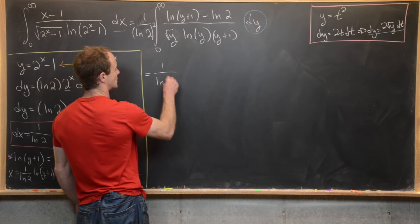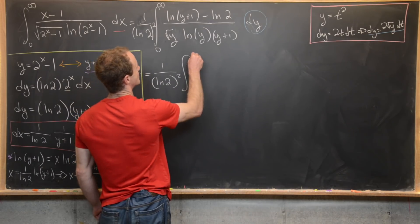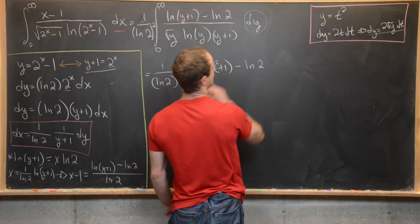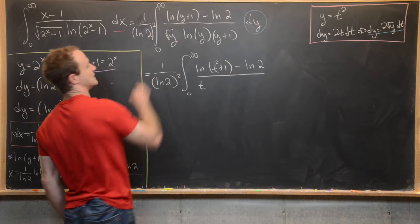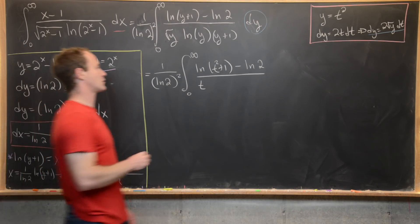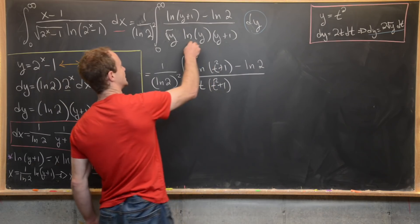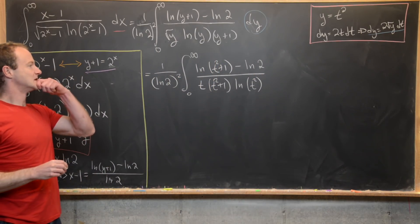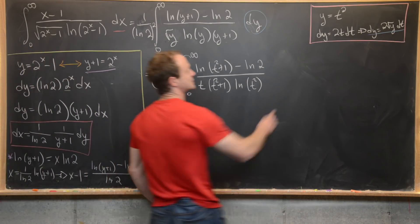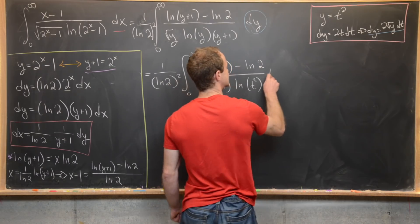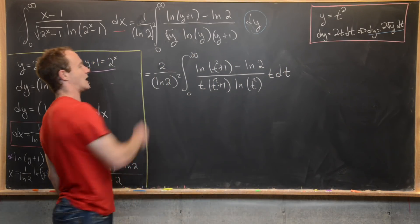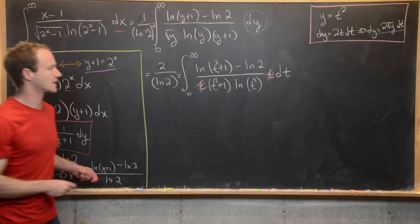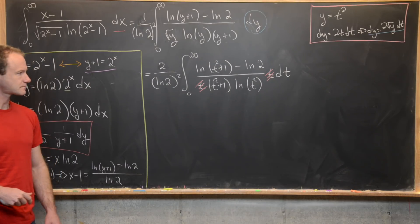After the second substitution, we get 1 over ln(2) squared out front, times the integral from zero to infinity of [ln(t²+1) minus ln(2)] over [t times (t²+1) times ln(t²)], multiplied by the dy component which gives 2t dt. We bring the 2 out front, and notice the t in the numerator cancels the t in the denominator, giving something a bit easier to work with.